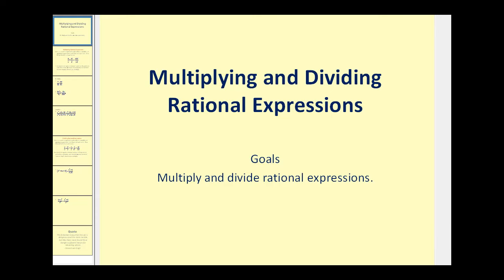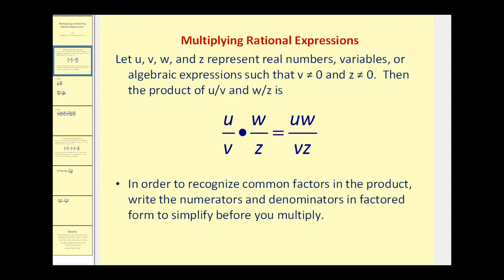Welcome to a video on multiplying and dividing rational expressions. Multiplying rational expressions is just like multiplying fractions. The basic rule is to find the product of two rational expressions: you multiply the numerators together and then you multiply the denominators together. However, our product must be in simplified form. So in order to recognize the common factors in the product, we'll write the numerators and denominators in factored form to simplify before we multiply.